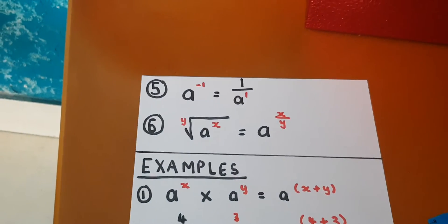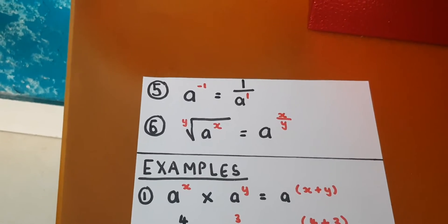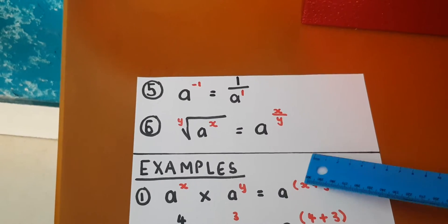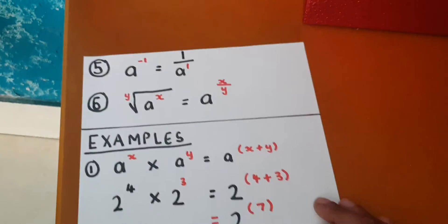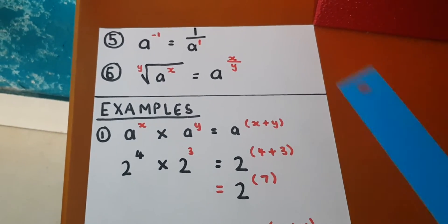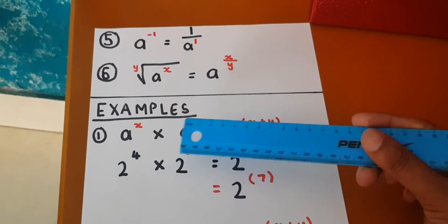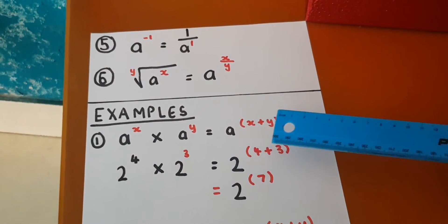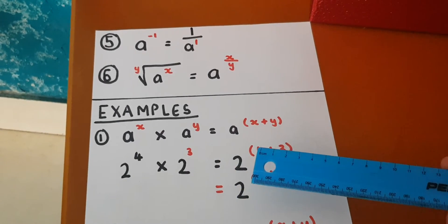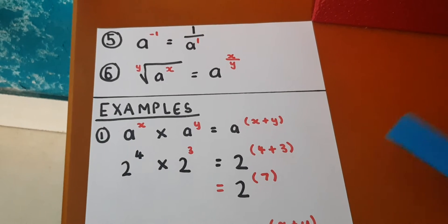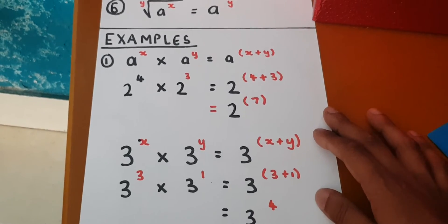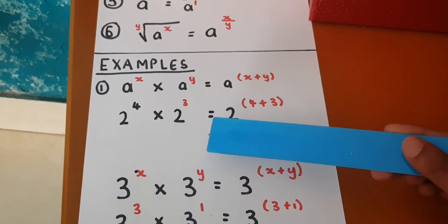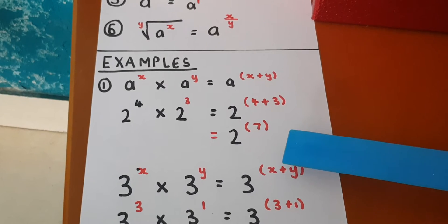The first law: a to the power x times a to the power y is equal to a to the power x plus y. Let's put it in practice. Two to the power four times two to the power three is equal to two to the power of four plus three, which is equal to two to the power seven.